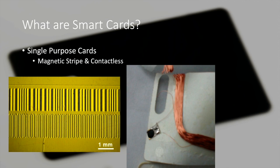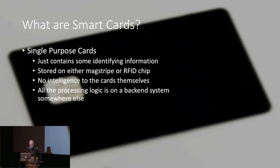So what's actually on these things? A lot of them have magnetic stripes — the picture on the left shows a magnetic image of what's actually in the mag strip, showing two or three tracks of repeating identification information. If you've ever wondered what's in a contactless card, like Oyster cards here in London: there's a large coil of wire acting as an antenna and also as a power source by induction from the reader, attached to a little chip. There's no real intelligence in these single-purpose cards — all the processing logic is on the back-end system.